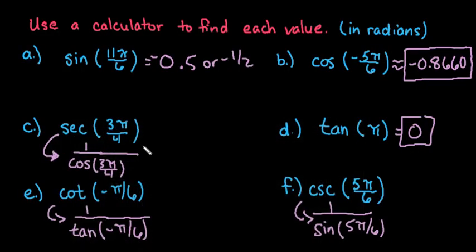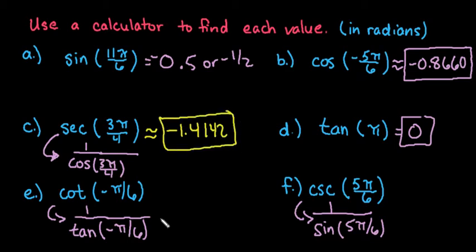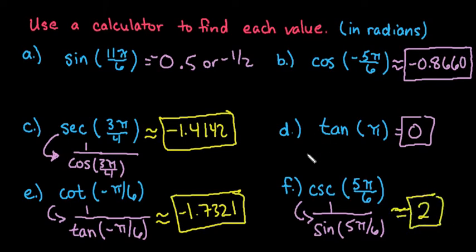All right. So let me write down these final answers. This is a very easy process because all you are doing is just plugging it into the calculator and then the calculator is evaluating it for you. So the secant 3 pi over 4 is approximately negative 1.4142. Cotangent is approximately negative 1.7321. And this one ends up giving us exactly 2.